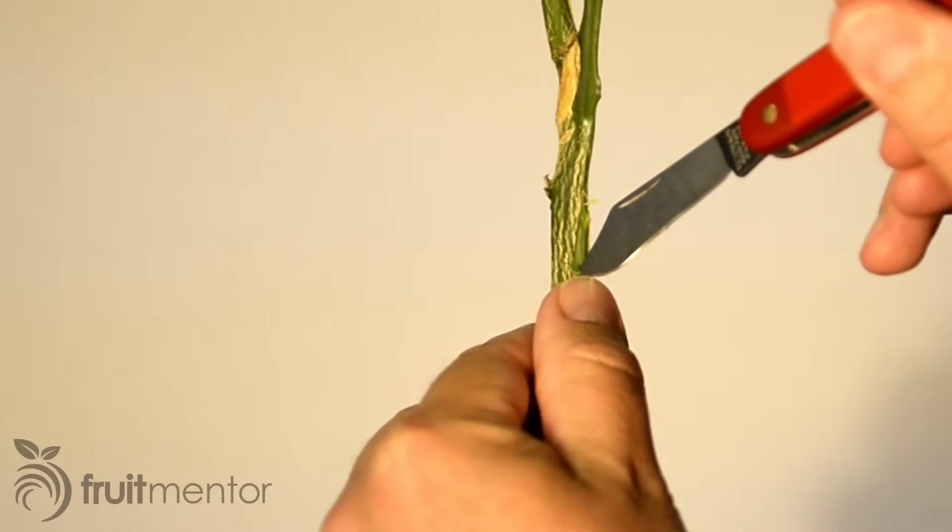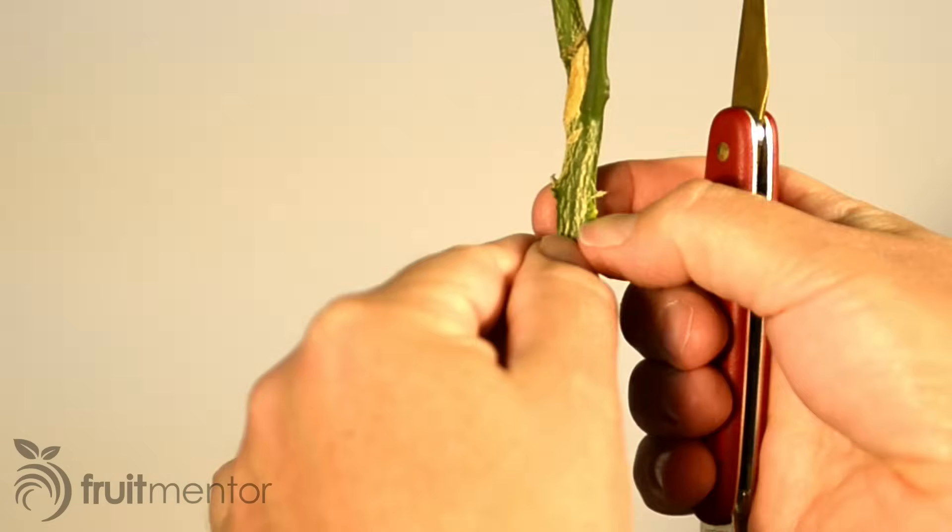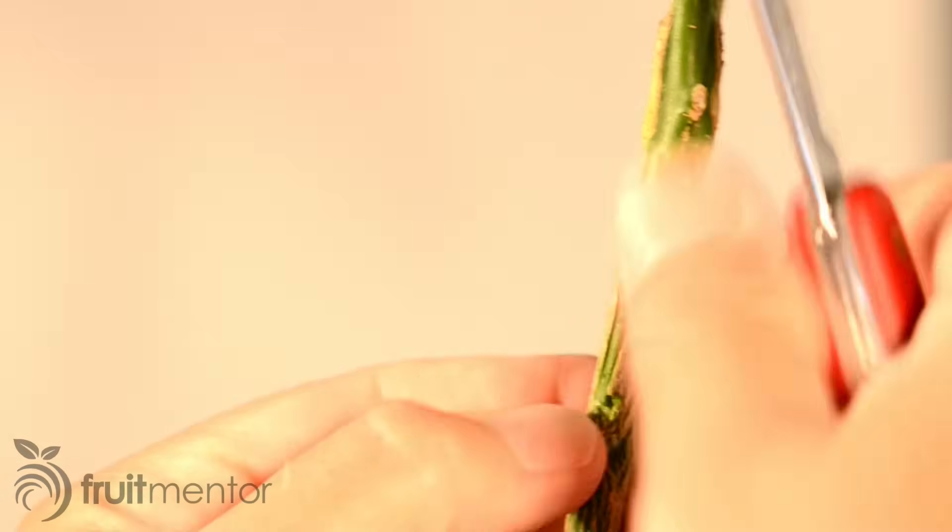Next, I insert the bud under the bark. I cut off the bottom of the bud piece that was sticking out.